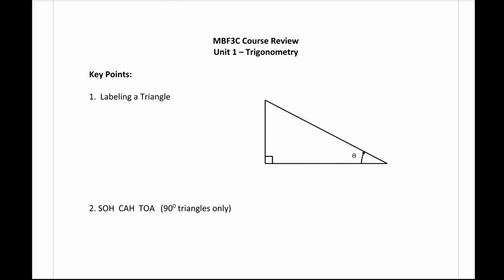The first key point is labeling the triangle. This is important because for right angle trig specifically we need to know what sides we're dealing with. The first side is always going to be across from our 90 degree angle — this is our hypotenuse. We then use our reference angle to label the other two sides: across or opposite from our reference angle is our opposite side, and the last remaining side is our adjacent, because adjacent means beside.